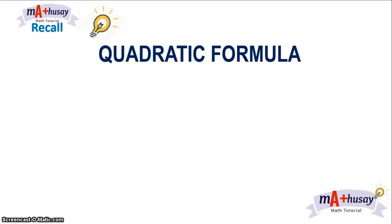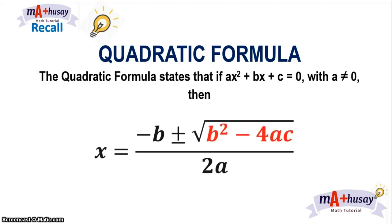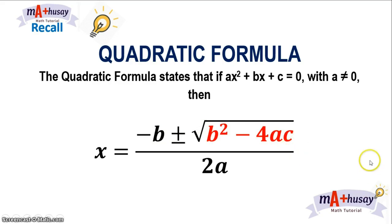Let's recall that the roots of quadratic equation ax² + bx + c are given by the quadratic formula: x = (−b ± √(b² − 4ac)) / 2a. We can see that the radicand b² − 4ac determines the nature of these roots. So let's analyze the different possible values of the discriminant.